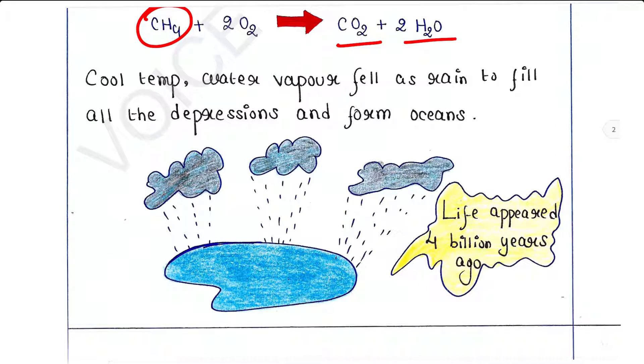As it cooled, the temperature cooled down, the water condensed into water vapor and fell as rain to fill all the depressions and form oceans.